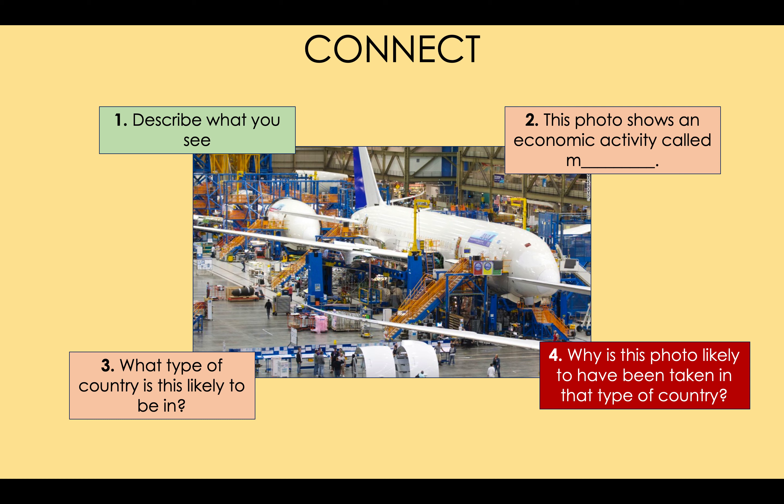Take a look at this photo. Describe what you see and answer the four questions. Pause the video, then come back. For number one, you should see an airplane being constructed — people doing different jobs, machines all around, the airplane isn't completely finished, and there's a large warehouse. Number two: this photo shows an economic activity called manufacturing — taking natural raw materials and turning them into manufactured, man-made products. Number three: this is an HIC — specifically in the state of Washington in the United States of America, the richest country in the world.